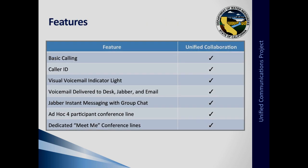The features of your new phone system: first and foremost, your phone is still just a phone, so you still have your basic calling. In addition, you'll now have caller ID, provided it's not a blocked number. You will also have a visual voicemail indicator light — no longer will you have to pick up the phone and listen for the stutter dial. You'll have a red light that illuminates when you have a voicemail.